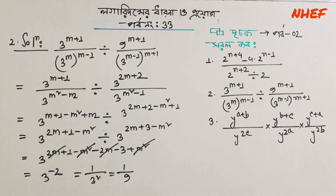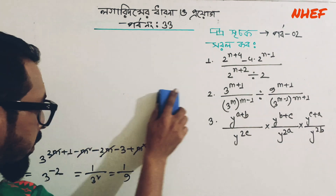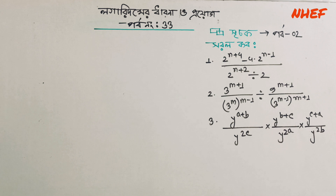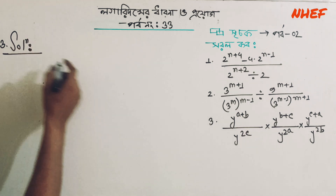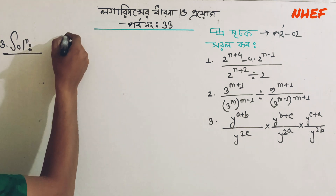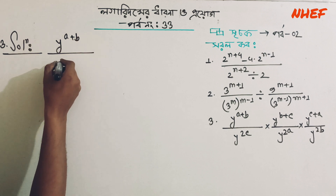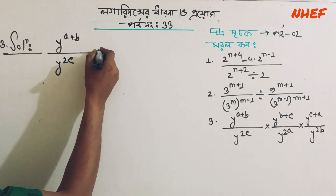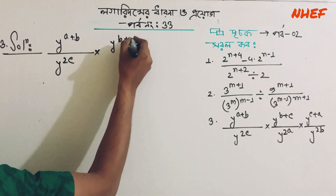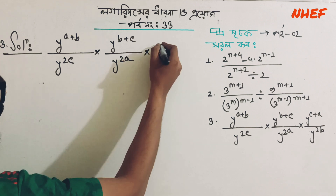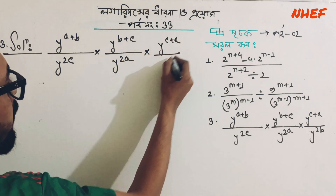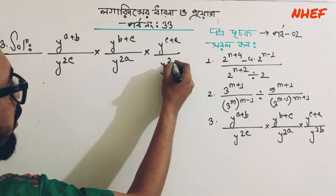This is number 2. If you choose number 2, then number 2 is equal to 2. As you can see, you can easily see number 3. The number 2 is equal to 3: a plus b divided by y to the power twice c, into y to the power b plus c, divided by y to the power twice a, into y to the power c plus a, divided by y to the power twice b.